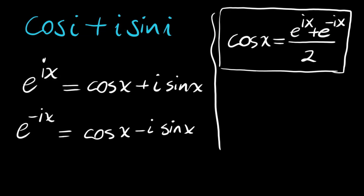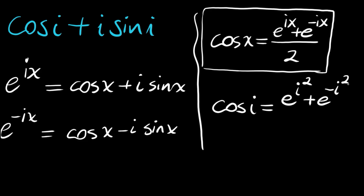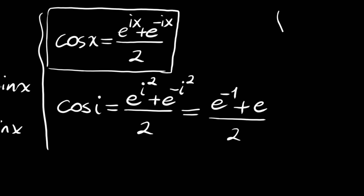Now we can find cos(i) by setting x equal to i. We have cos(i) equals e to the power of i·i, which is i squared, plus e to the power of negative i·i, which is negative i squared, all divided by 2. So cos(i) equals e to the negative first power plus e to the first power, divided by 2. Surprisingly, this is a real number.